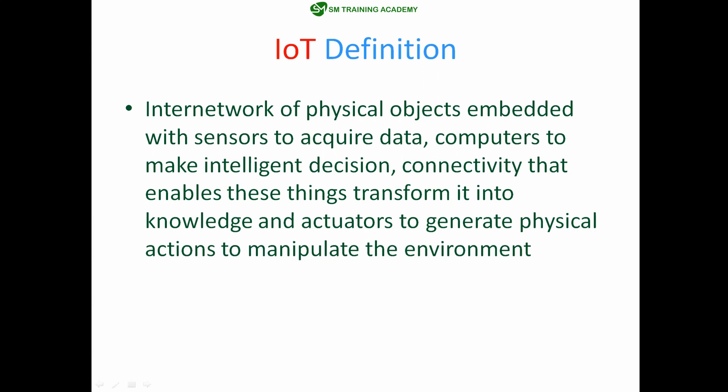Finally, we need actuators to generate physical actions to manipulate the environment. If my machine is in a remote location and I am at home and want to change some parameters, that can only be done with the help of actuators — whether it is a motor, linear actuator, cooler, heater, or coil. For example, if the temperature in my machine is exceeding a limit, I want to turn on the cooler from home via the cloud. These devices are called actuators.